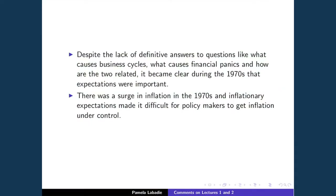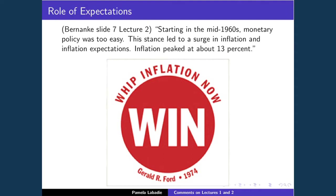Despite the lack of clear answers about what causes business cycles or financial panics, it became clear during the 1970s that expectations were important. The chairman mentioned this several times — there was a surge in inflation in the 1970s, and inflationary expectations made it very difficult for policymakers to get inflation under control. As Bernanke noted: starting in the mid-1960s, monetary policy was too easy, leading to a surge in inflation and inflation expectations. Inflation peaked at about 13 percent.